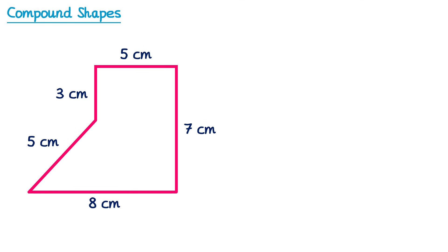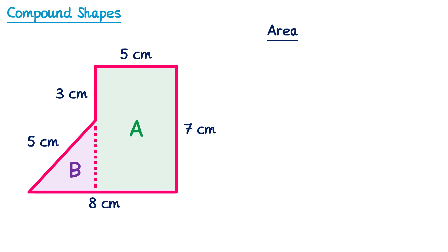Now for the area — it's slightly more tricky. There are two possible ways of splitting this shape: a horizontal line which would split it into a rectangle and a trapezium, or a vertical line which splits it into a triangle and a rectangle. I'm going to use the vertical approach, labelling the rectangle as A and the triangle as B. The height of rectangle A is 7 and the width is 5, so 7 multiplied by 5 is 35.